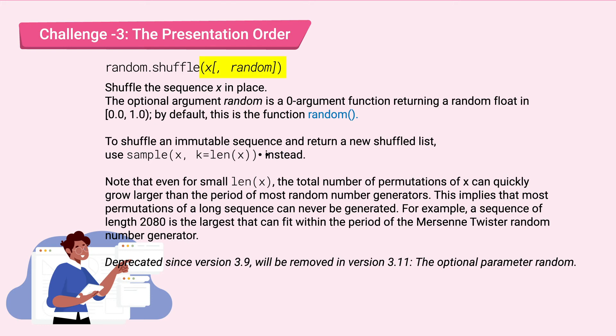Random.shuffle takes two parameters. It shuffles the given list x in place. One thing to note here is that the second parameter is an optional one as indicated by the brackets.